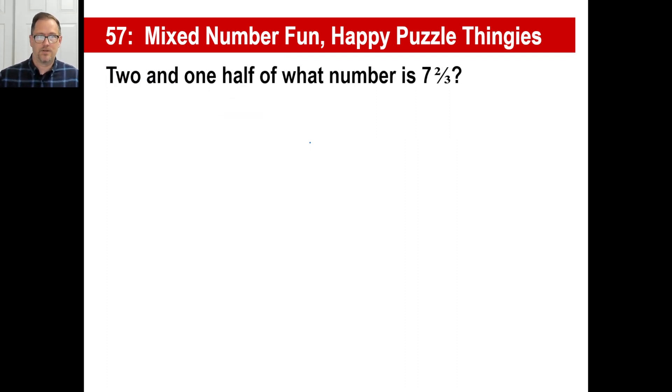Now let's look at this. Two and one-half of what number is seven and two-thirds? Well, very similar. We can just go left to right. Two and one-half of what number, times X, is equals seven and two-thirds. In other words, two and a half times something is about seven. I'd say it's about three-ish, between three and four, somewhere around there.